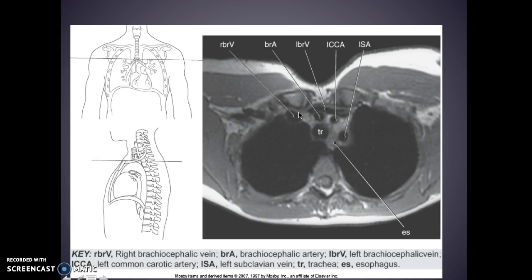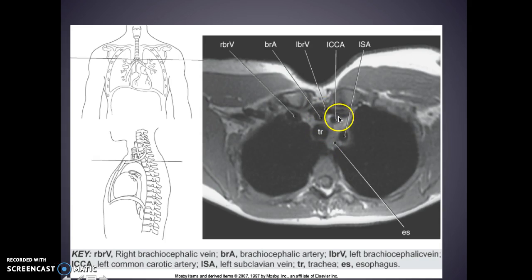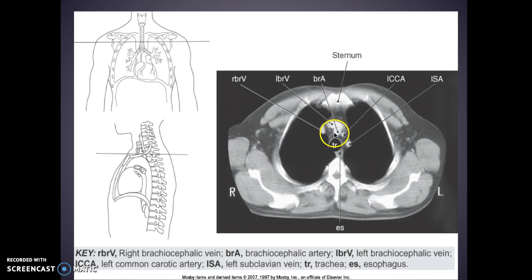When we're looking here, going across: here is your right brachiocephalic vein, then your brachiocephalic artery to your internal carotid artery, and then your left subclavian vein. This is your esophagus and your trachea, and then your left brachiocephalic vein. Coming across again: right brachiocephalic vein, right brachiocephalic artery, internal carotid artery, and your left subclavian vein — esophagus and trachea also.